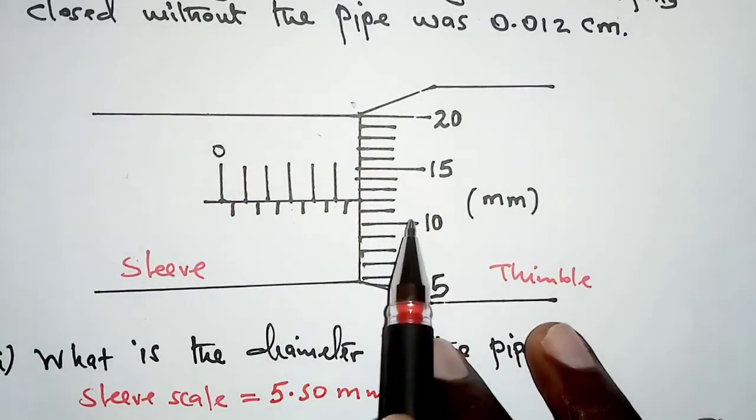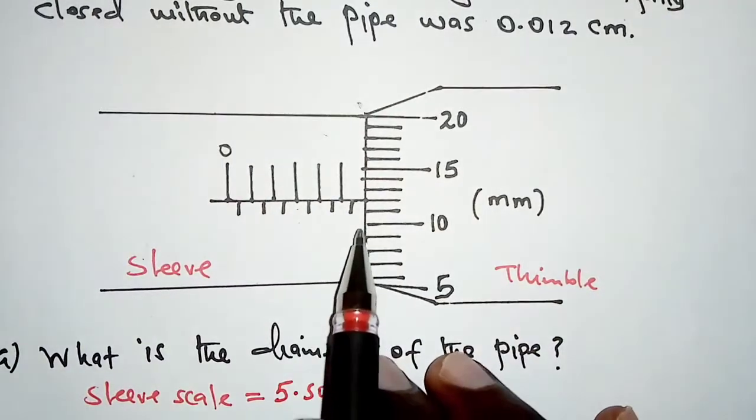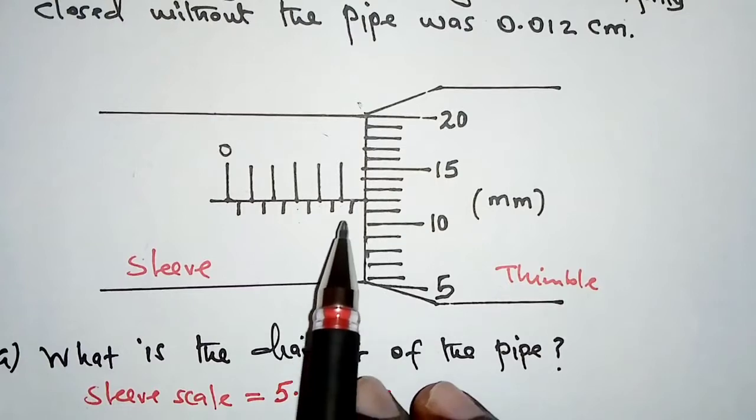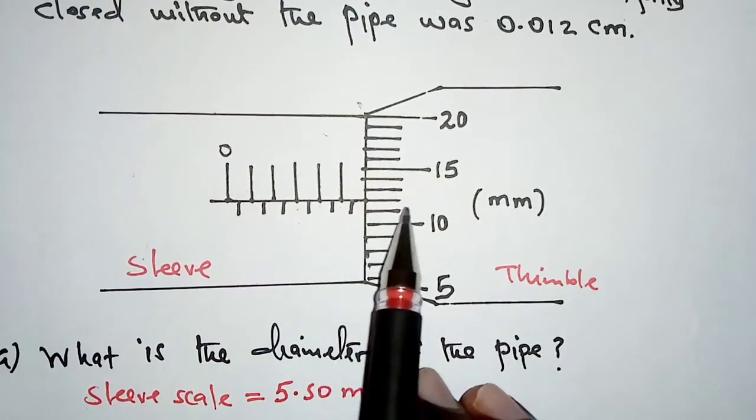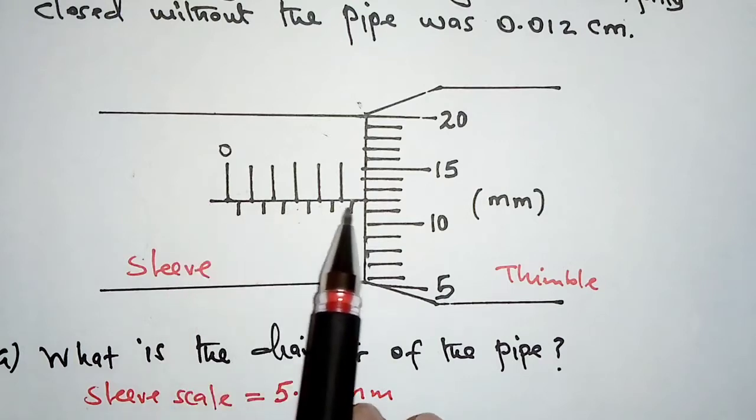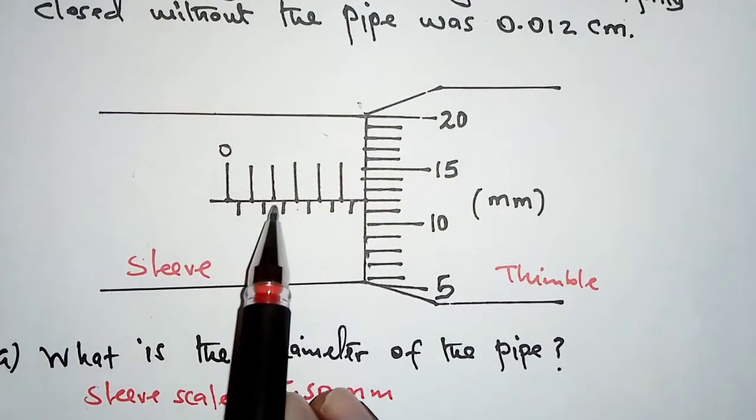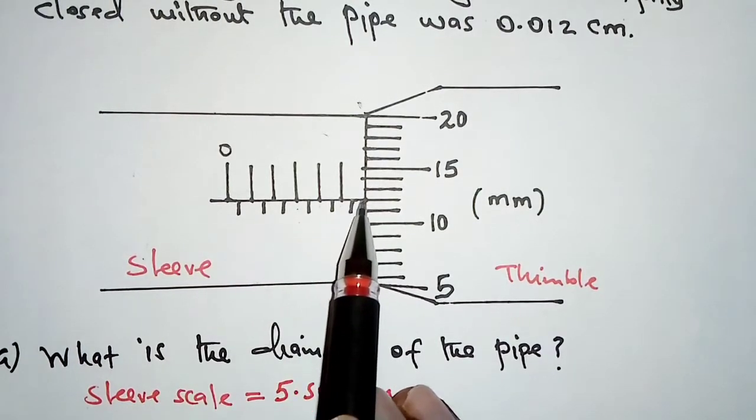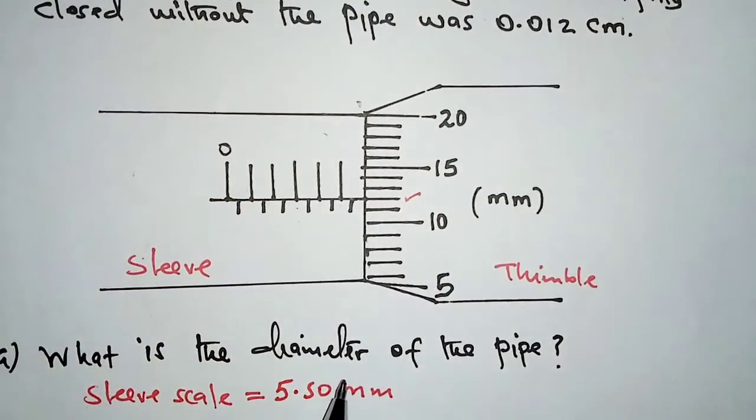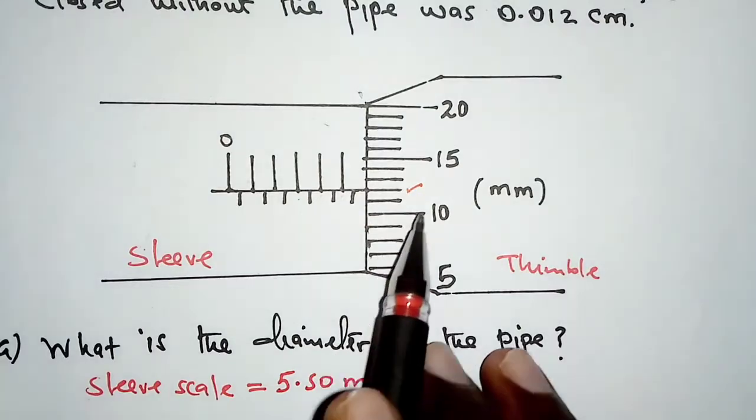Let's now look at the thimble scale. The reading on the thimble scale that we'll consider will be the mark that coincides with the center line of the sleeve scale. This is the center line. This line that coincides with it, right here, will be where we take our reading.